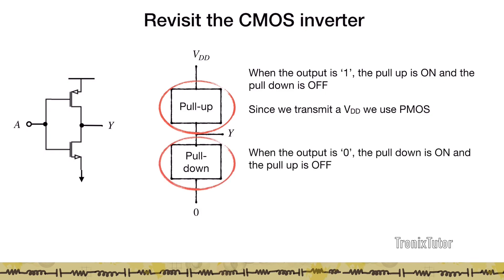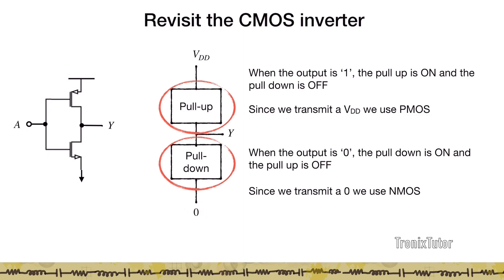Similarly, when the output is a zero, the pull-down is on and the pull-up is off — the pull-down is a closed switch network and the pull-up is an open switch network. We transmit zero to Y, and since we want to transmit a zero we use an NMOS. This is exactly the same as a CMOS inverter, just broken down into a pull-up transistor and a pull-down transistor.